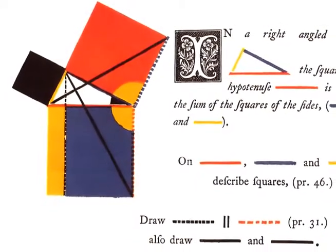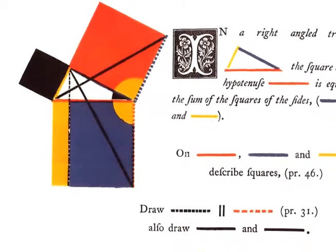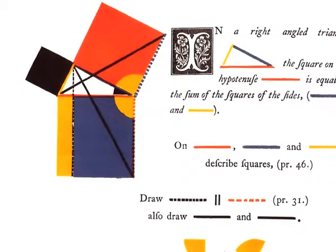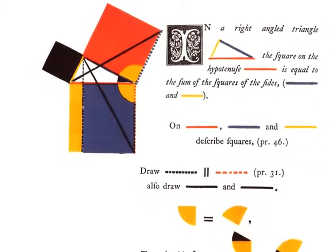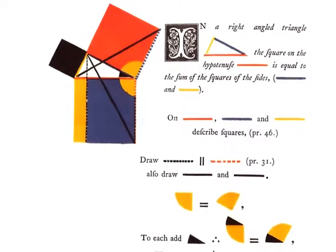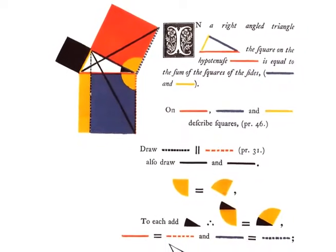In 1847, British engineer Oliver Byrne tried to change that by creating this visual representation of Euclid's proof. Using color associations and plain visual comparisons, Byrne made the proof accessible to a much wider audience.